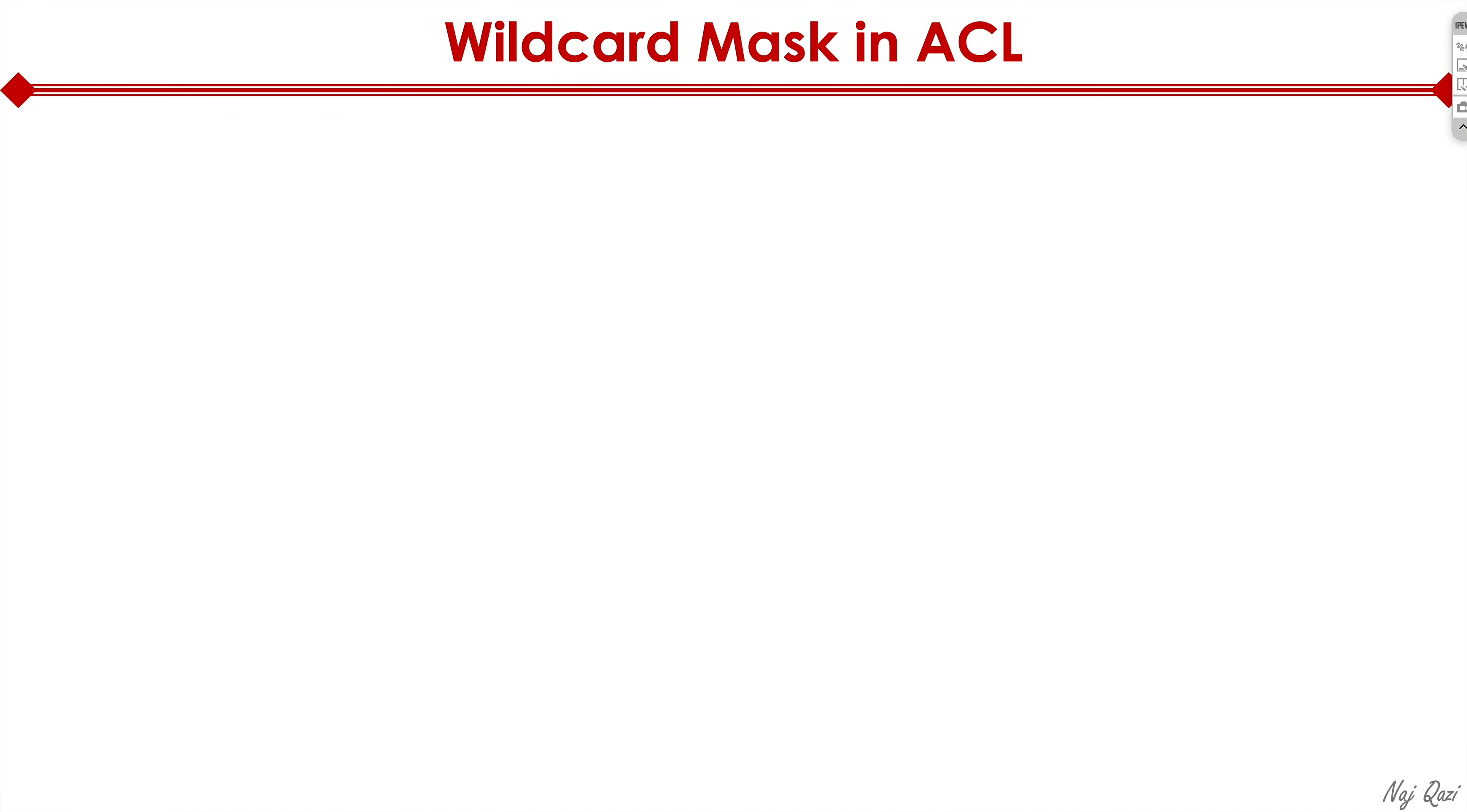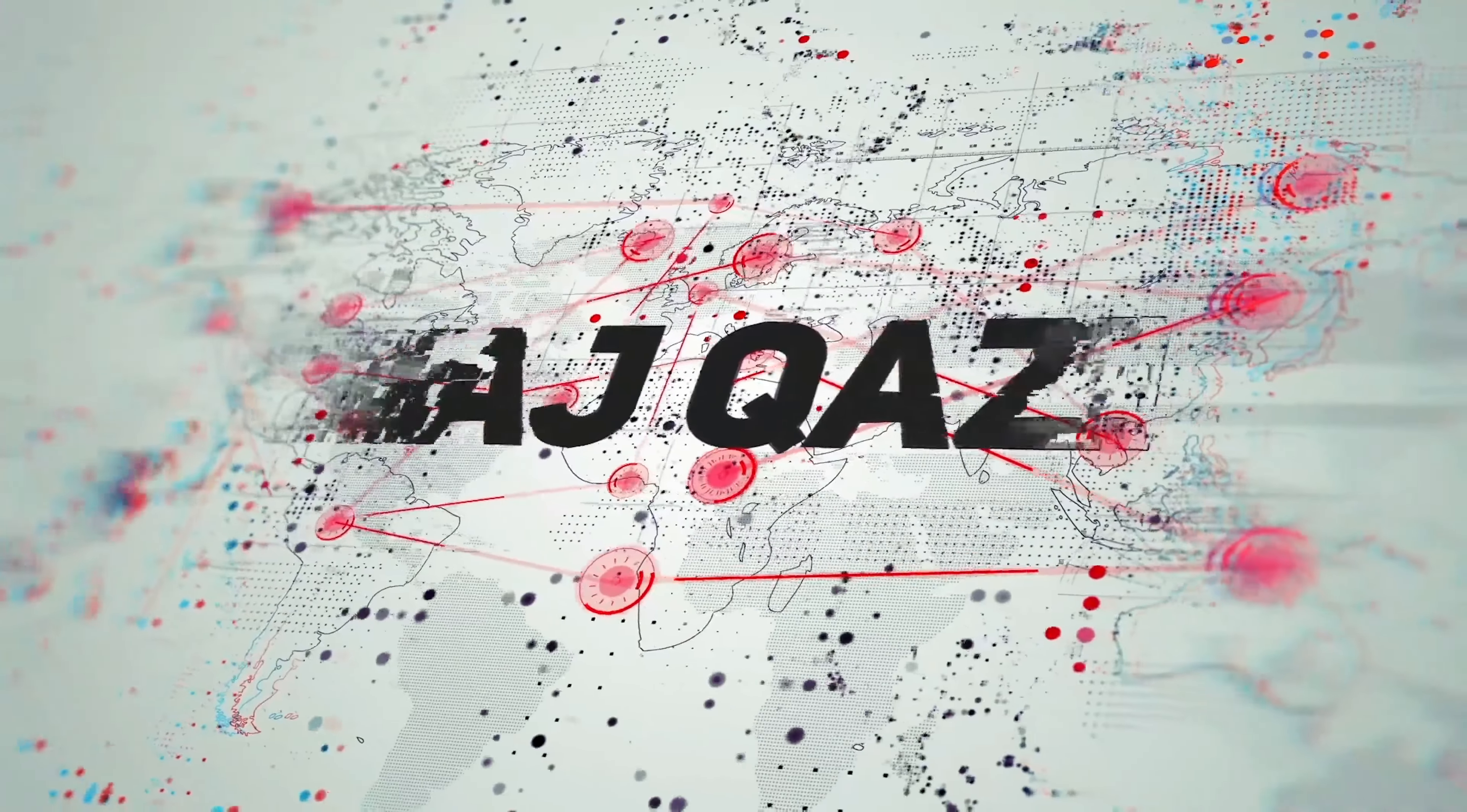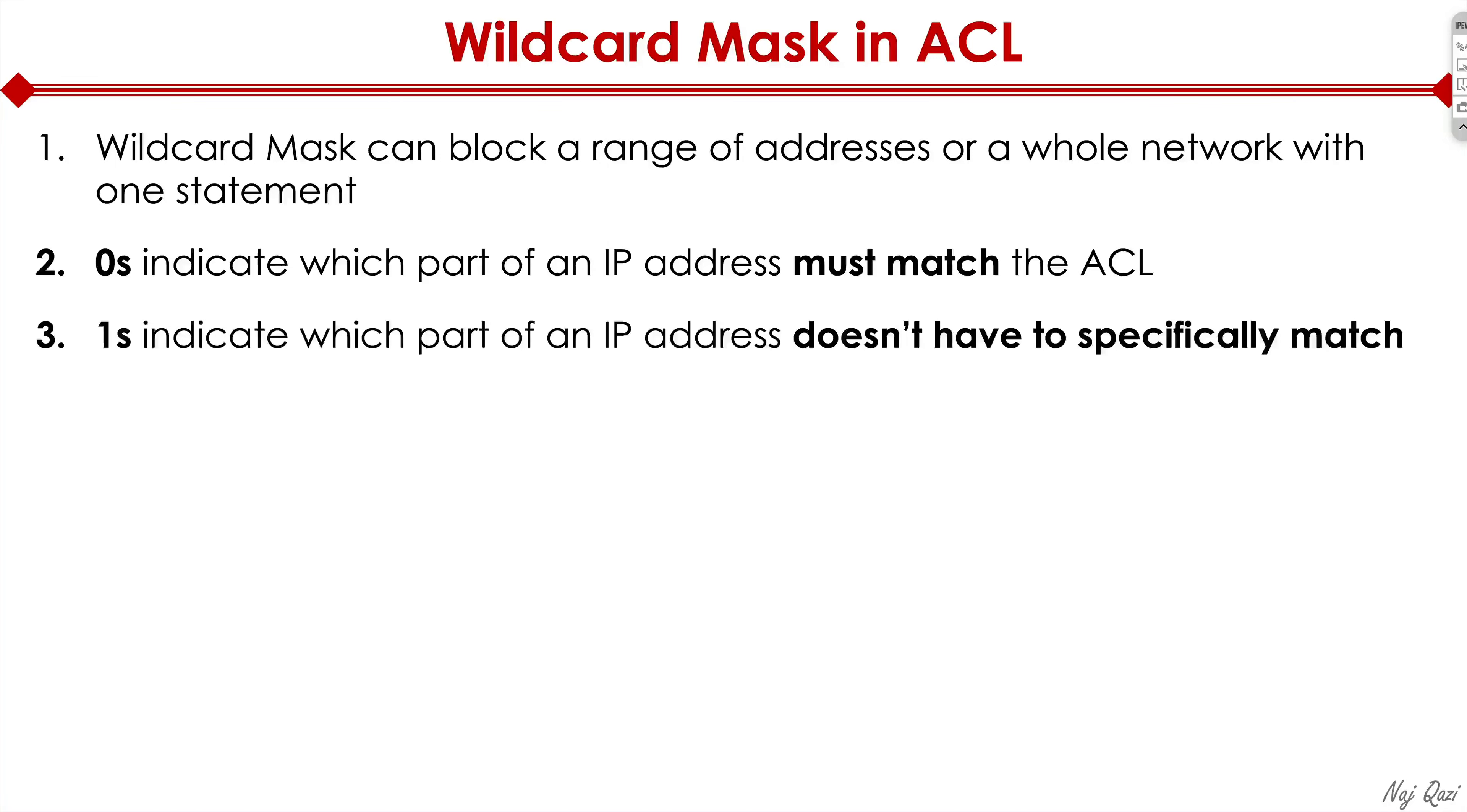Now let's quickly talk through the wildcard mask because ACLs require a wildcard mask. Wildcard mask can block a range of addresses or a whole network with just one statement. Zeros indicate which part of an IP address must match the ACL. Ones indicate which part of an IP address doesn't have to specifically match the ACL.